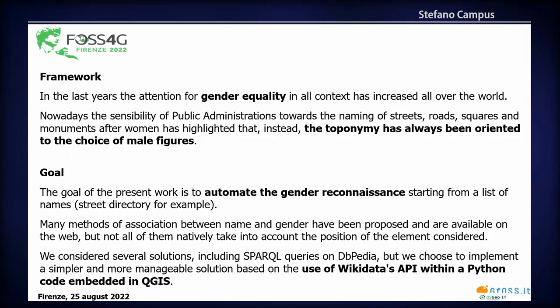The framework is that in recent years, attention to gender equality in all contexts has increased all over the world. The sensibility of public administration towards the naming of streets and points of interest after women has highlighted that toponymy has always been oriented toward the choice of male figures.